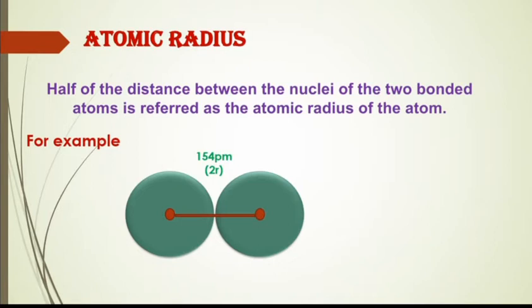यह 2R बनता है - 2R means कि first वाले carbon atom का radius और second वाले का radius, दोनों को add करें तो 2R बनता है। इसका half, that is 77 picometers. तो यह जो दोनों के nucleus के बीच का distance है, 154 picometers, इसका half 77 picometers - इसे हम Atomic radius कहते हैं। यह कह लें कि किसी भी atom के center में जो nucleus होता है, वहाँ से लेके जो outermost shell है वहाँ तक जो distance बनता है, उसको Atomic radius कहते हैं।